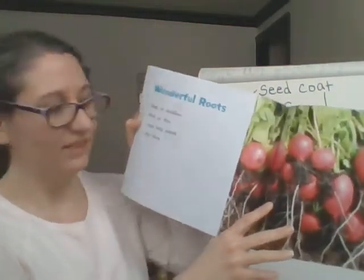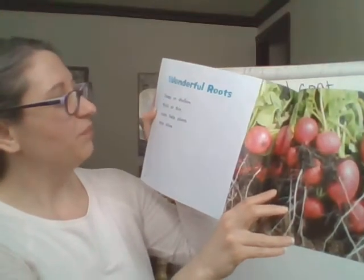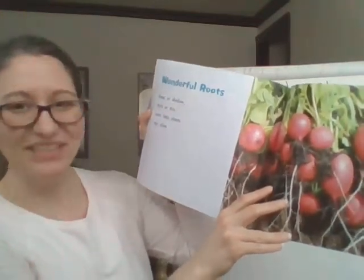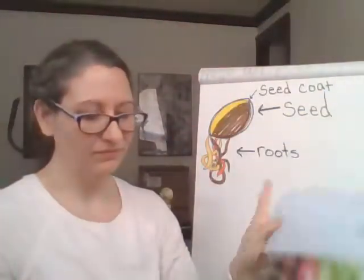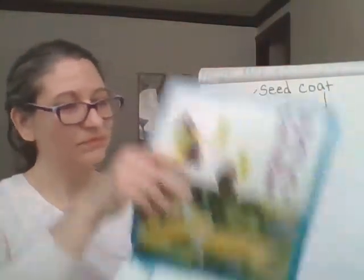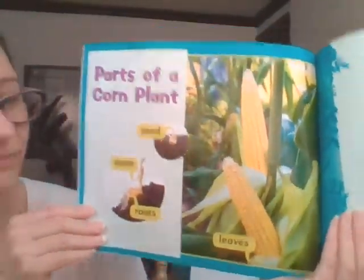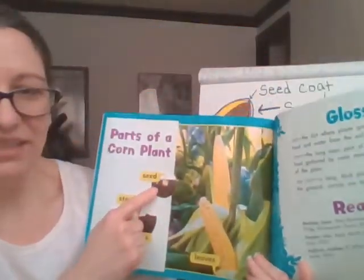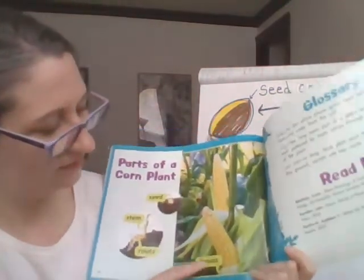'Wonderful roots — deep or shallow, thick or thin — roots, roots, roots help plants stay alive.' Then there's a diagram for us: parts of a corn plant — the seed, stem, roots, and leaves.